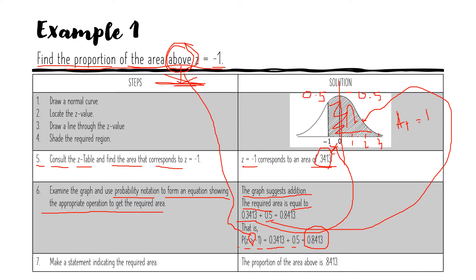For step 7, make a statement indicating the required area. Therefore, the proportion of the area above Z equals negative 1 is 0.8413. That will be your final answer.